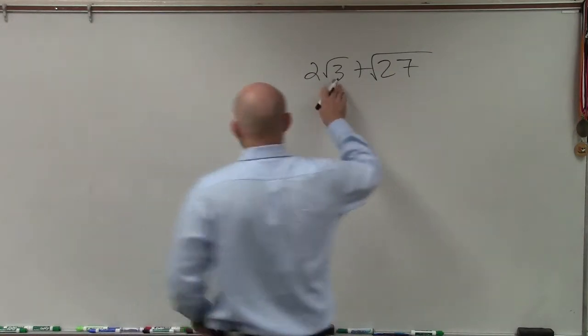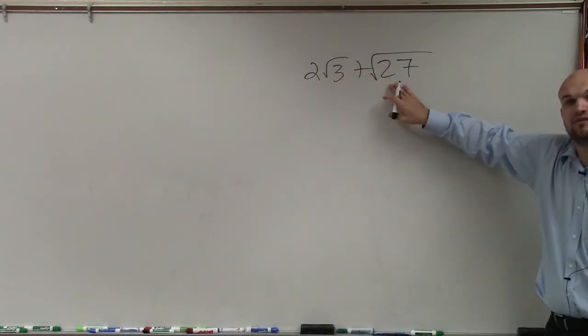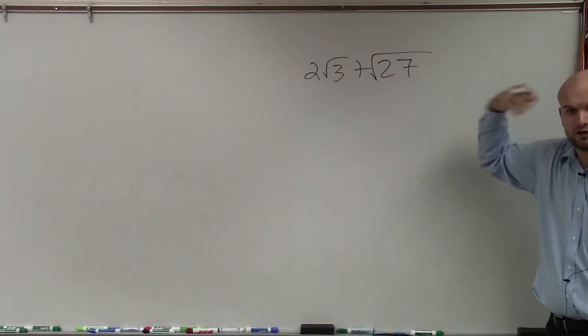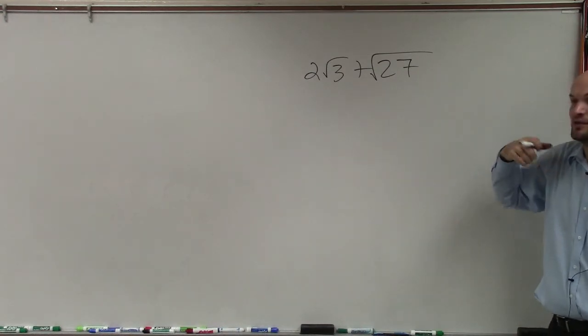We can't simplify √3 any further, but we can simplify √27. Look for square numbers that evenly divide into 27.